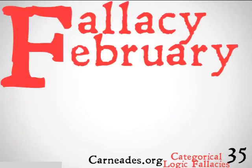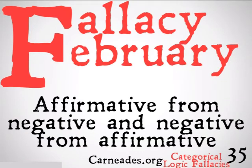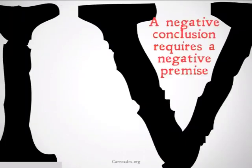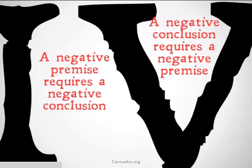Welcome back to Fallacy February with 92nd Philosophy and carnadies.org. Today we are going to be continuing with our special series on Categorical Logic Fallacies, looking at the fallacy of affirmative from negative and negative from affirmative. This is the fallacy that applies to a categorical syllogism when it does not obey rule number four. Rule number four is: a negative conclusion requires a negative premise, and a negative premise requires a negative conclusion.